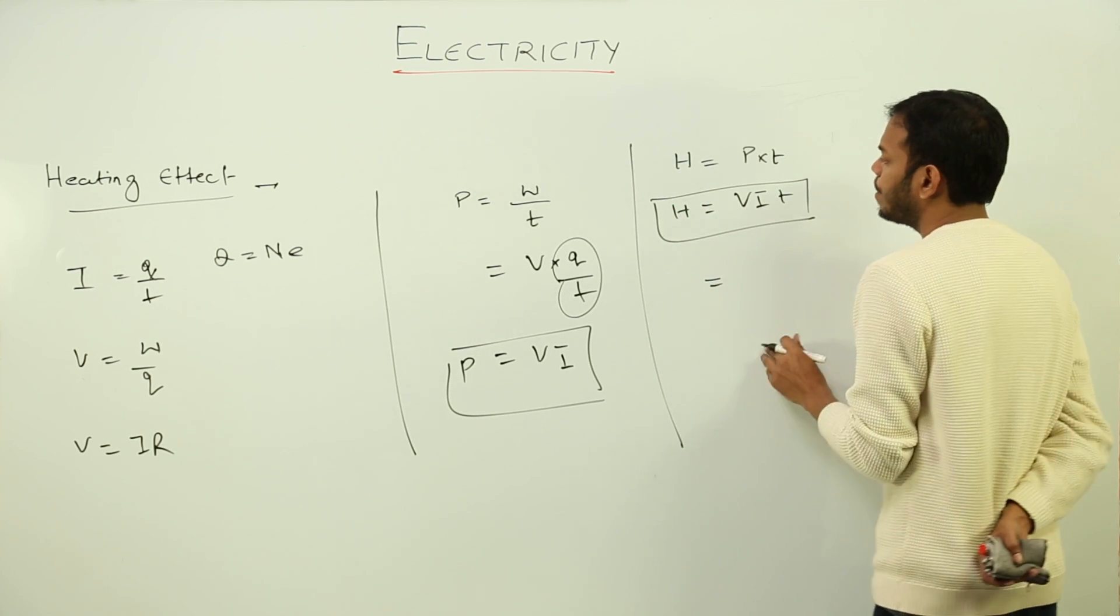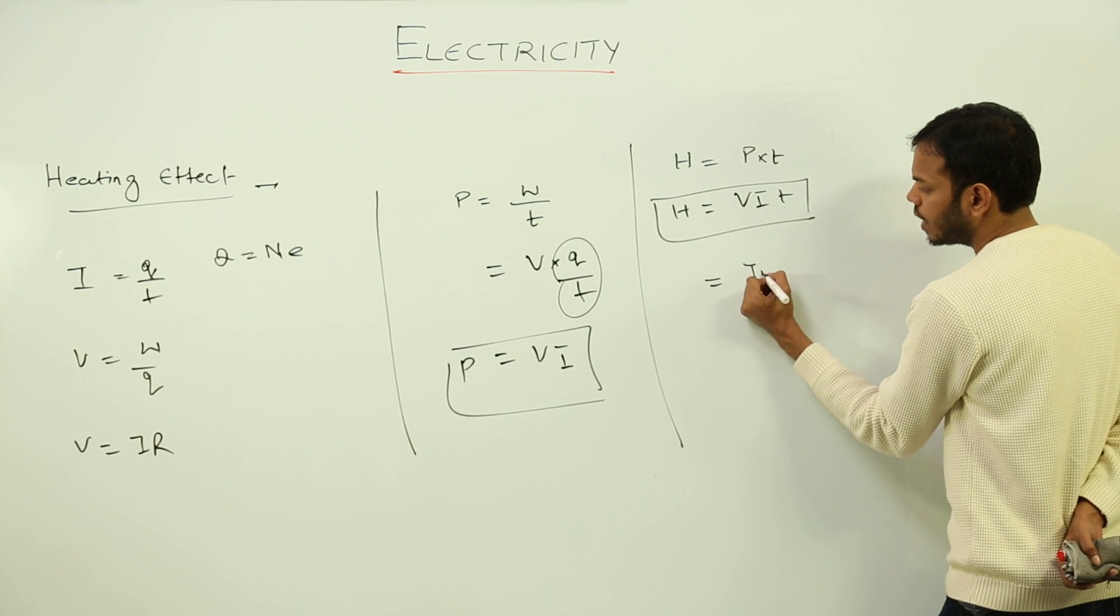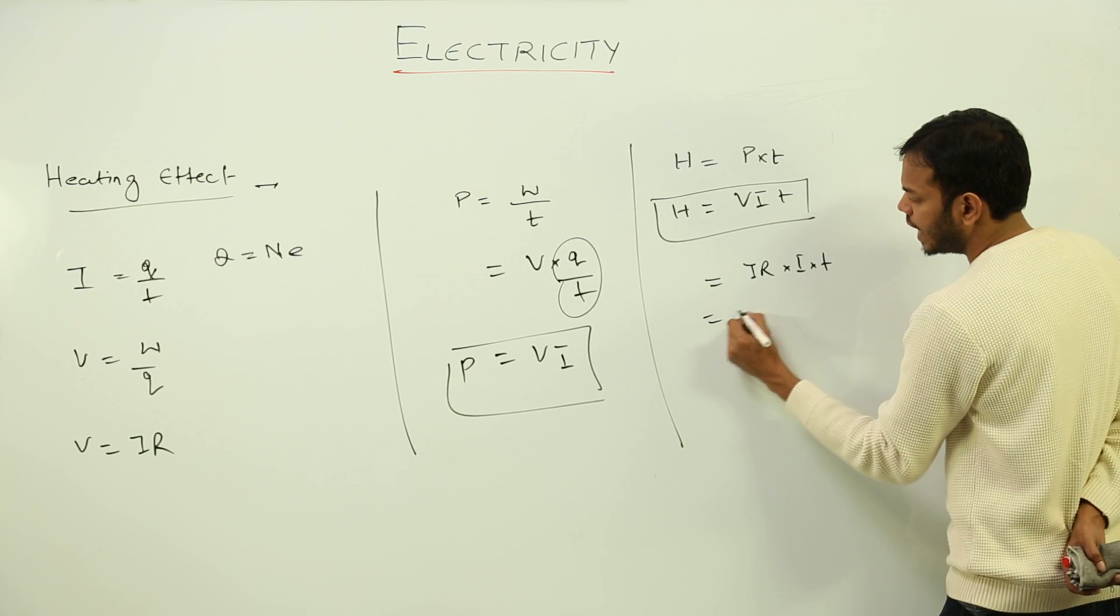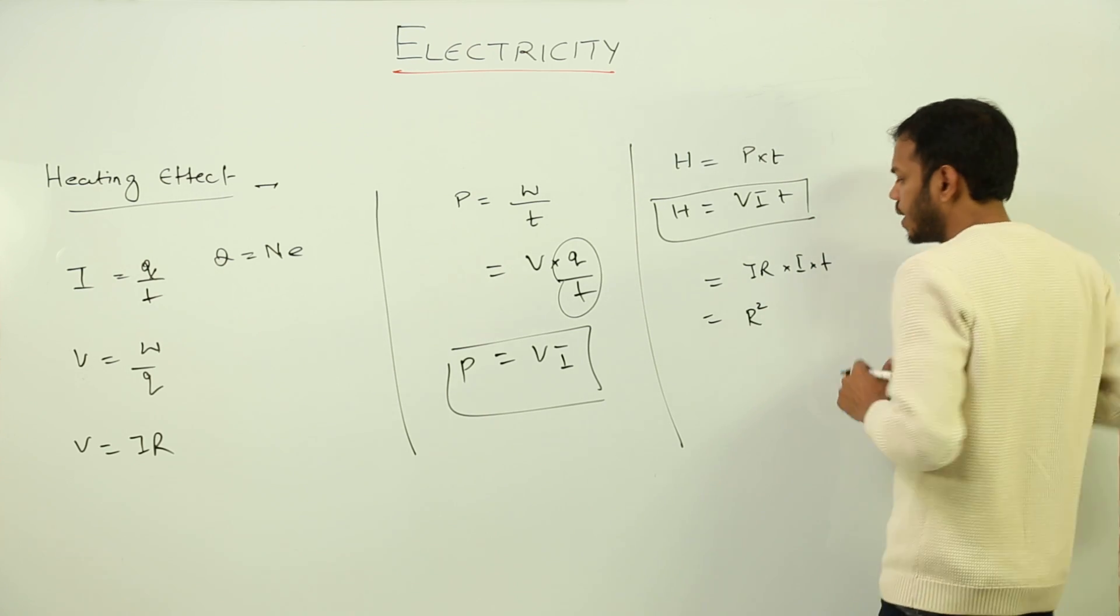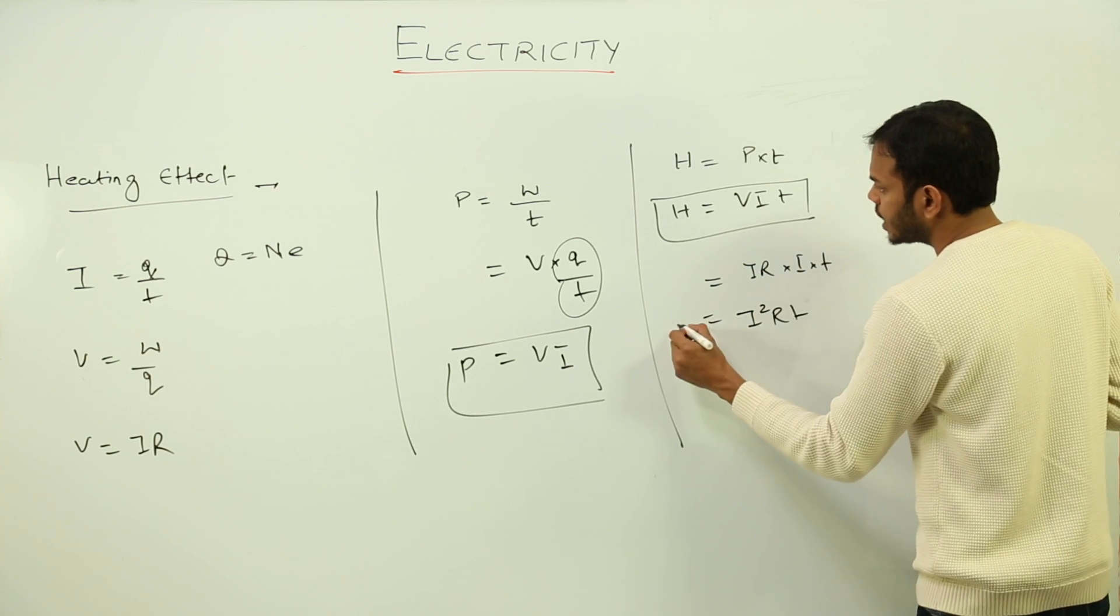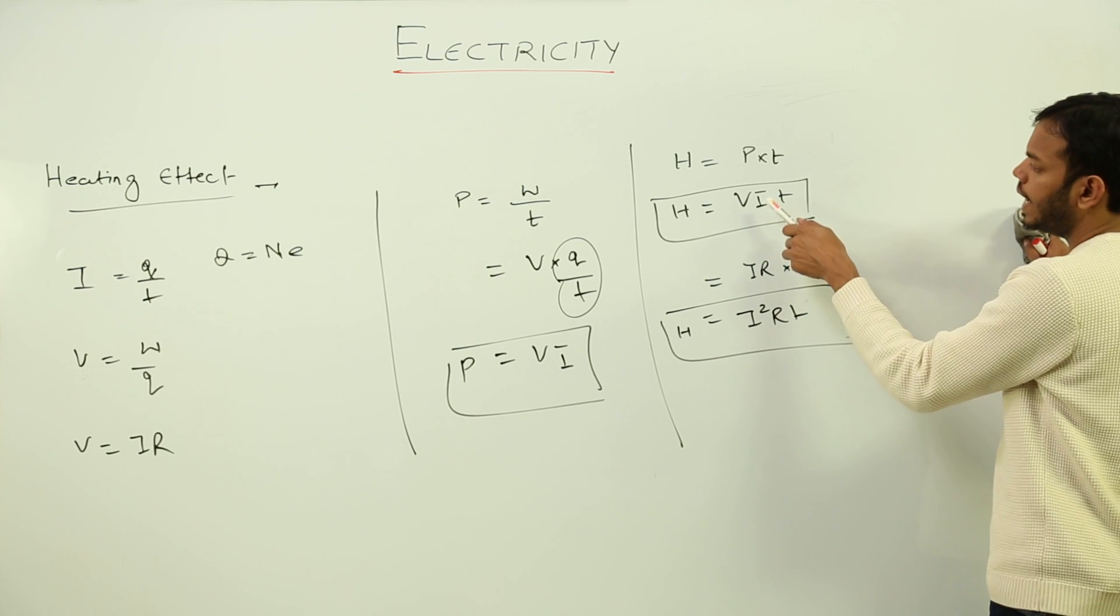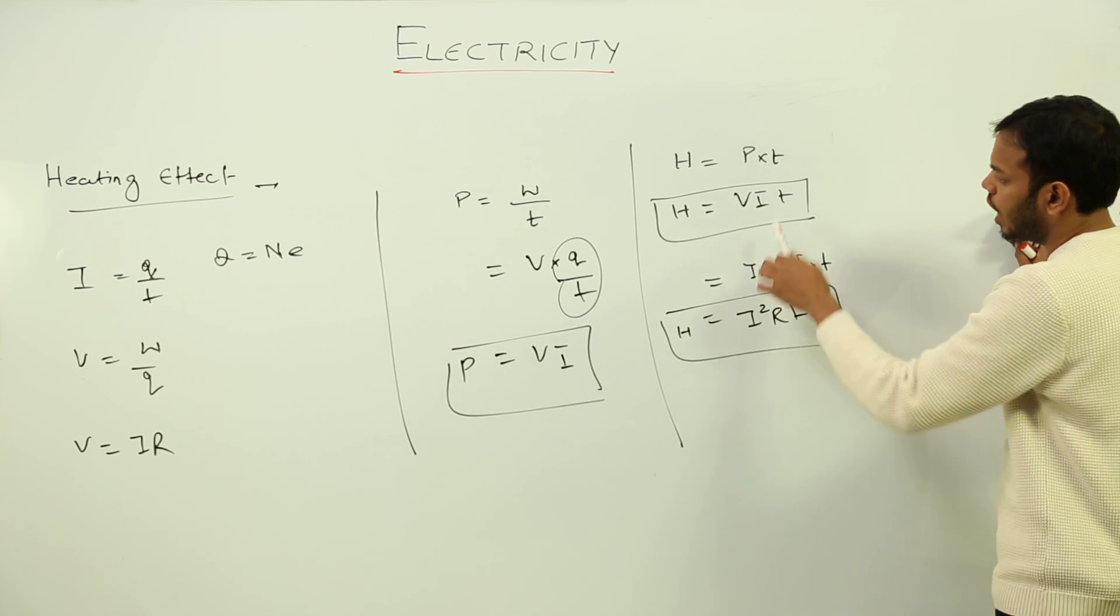Another formula can be put V equals to IR. So I will get IR into I into T, so I will get I square RT, not R square. This becomes I²RT. This is the value of heat generated.